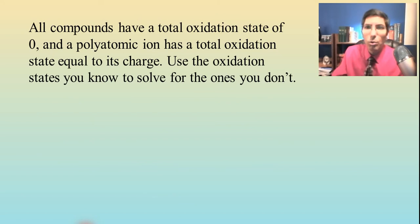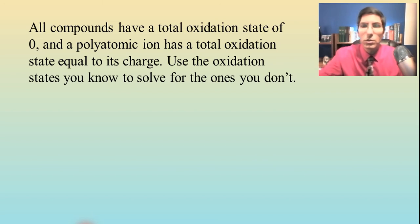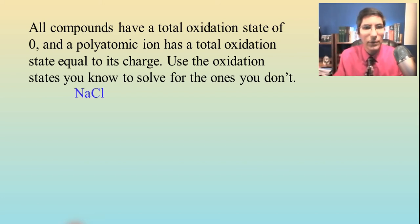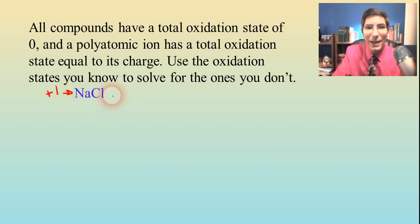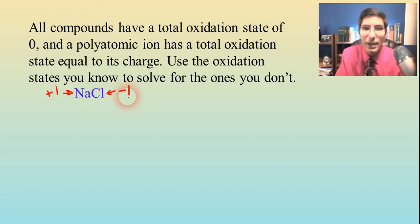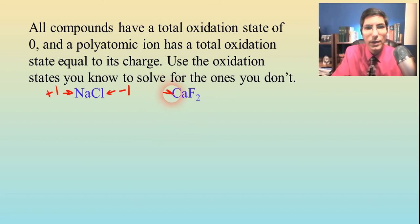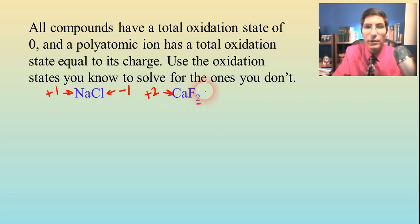All compounds have a total oxidation state of zero, and any polyatomic ion has a total oxidation state of whatever its charge says it is. You want to solve these like a puzzle — use the oxidation states that you know to solve for the ones that you don't know. For example, in NaCl: if Na is positive one and the whole compound is neutral, then chloride would have to be negative one. In calcium fluoride, calcium is positive two, so the fluorides altogether must be negative two — and we have two of them, so that divides out to negative one each, giving us the total negative two.